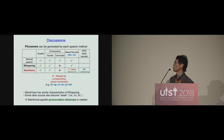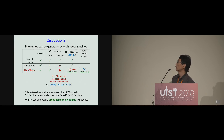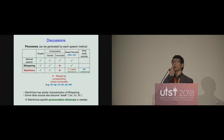There are some discussions. This table shows the phonemes that can be generated by each speech method in whispering and silent voice. A major limitation is unvoiced consonants. In silent voice, some nasal sounds also become weak because the microphone is far from the nasal opening.